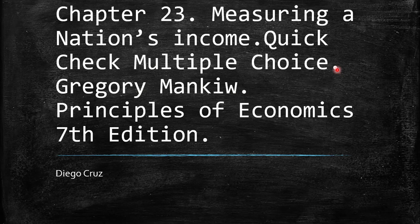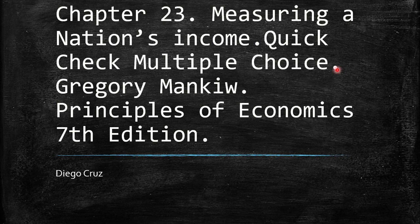Welcome to this video. We're going to talk about Chapter 23: Measuring a Nation's Income, and discuss the quick check multiple choice questions. This is from the book Mankiw's Principles of Economics.